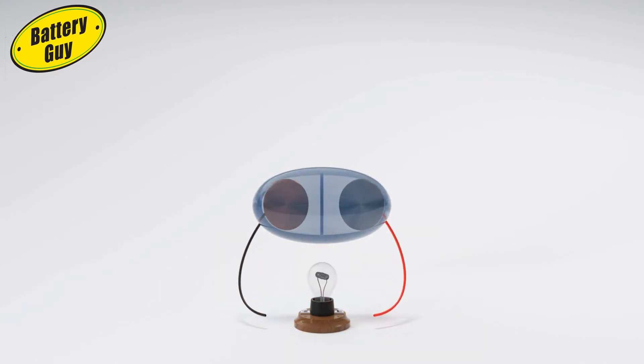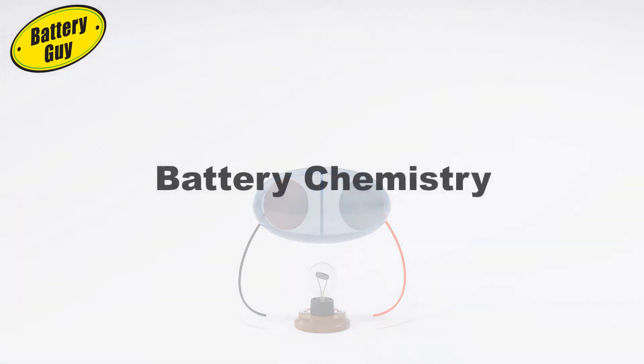The materials which make up the cathode, the anode, the separator and the electrolyte vary depending on the type of battery or, as it is known, the battery chemistry.